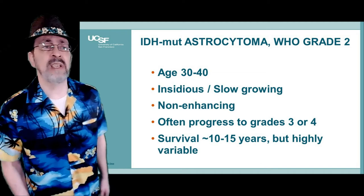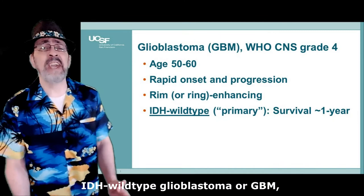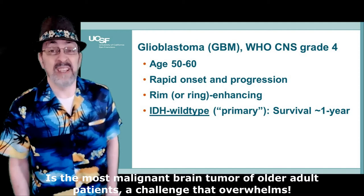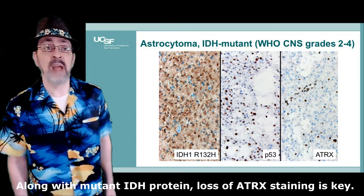IDH mutant tumors are much better prognostically, with slow growth yet ultimately high-grade transformation radiologically. IDH wild-type glioblastoma, or GBM, is the most malignant brain tumor of older adult patients, a challenge that overwhelms. Along with mutant IDH protein,